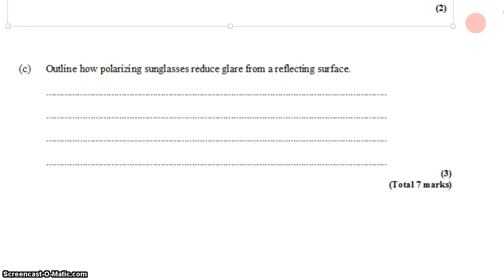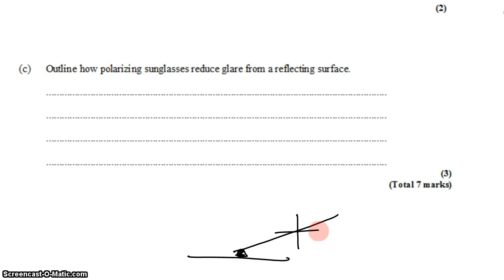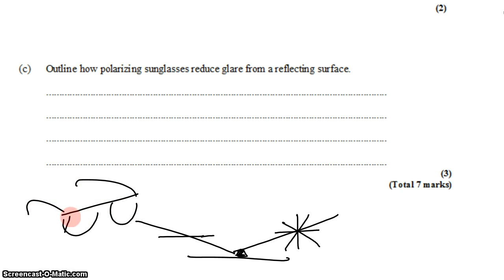Part C: outline how polarizing sunglasses reduce glare from a reflecting surface. Consider a puddle in the road with unpolarized sunlight striking it — oscillating up and down, left and right, every which way. When light reflects off a surface, it can become polarized in the same plane as that surface. So reflecting off a horizontal surface produces horizontally polarized light; the remaining polarizations are transmitted into the puddle. Since the reflected glare is horizontally polarized, wearing vertically polarized sunglasses will block that horizontal reflection, preventing the glare from reaching your eyes.